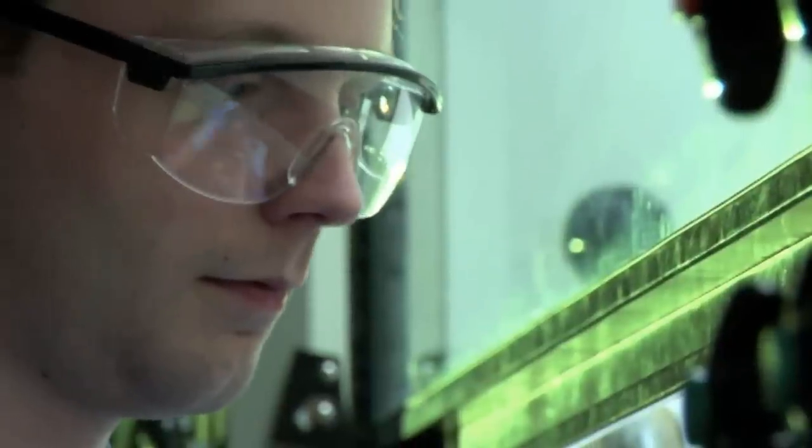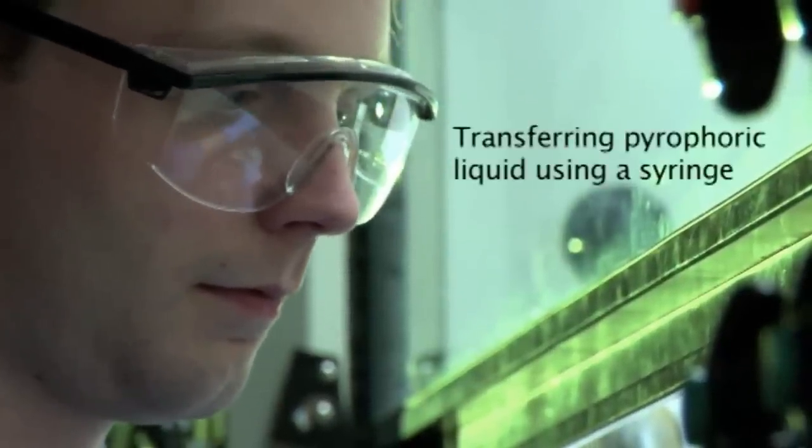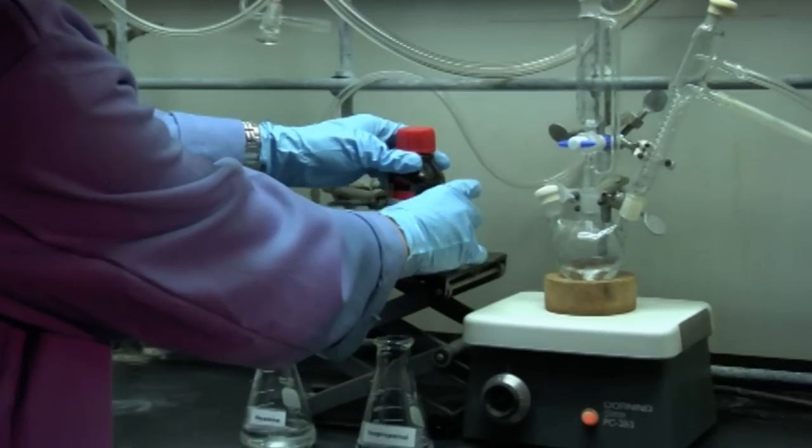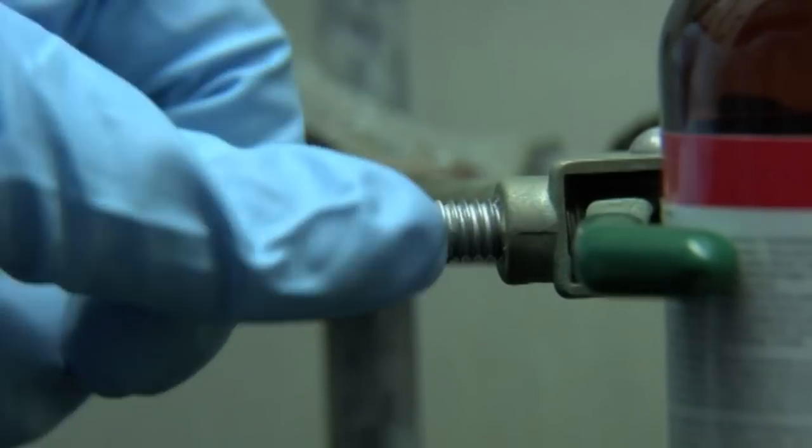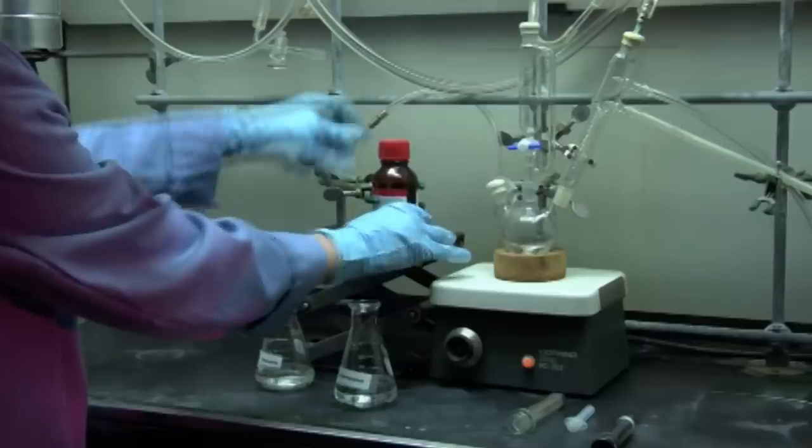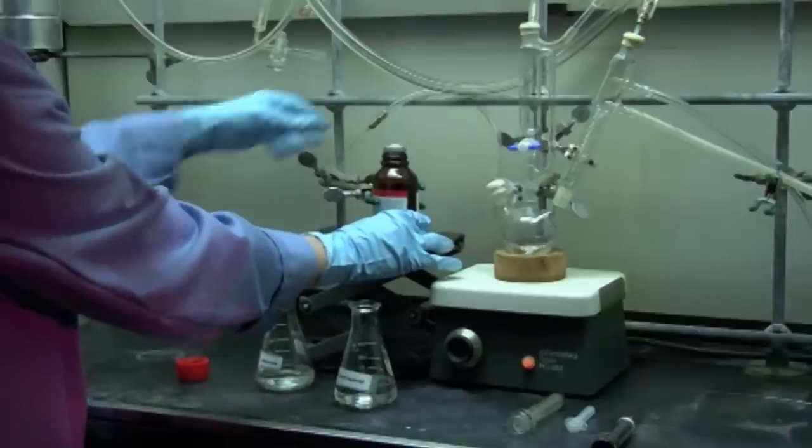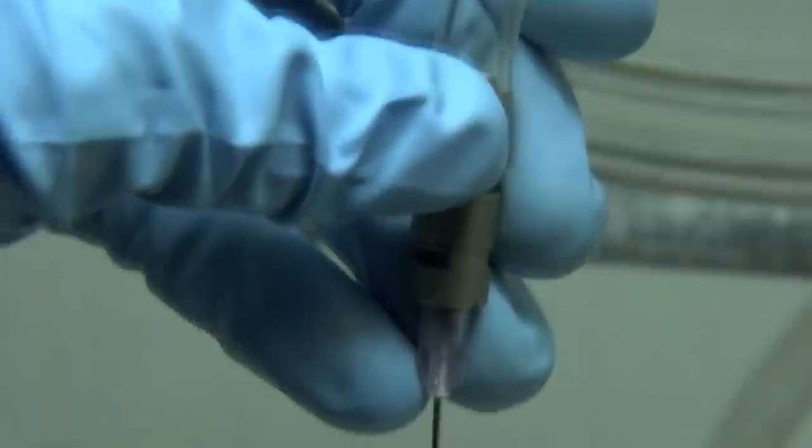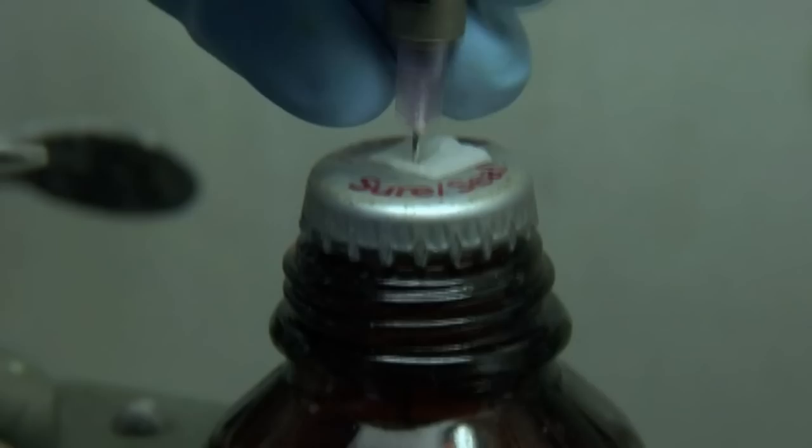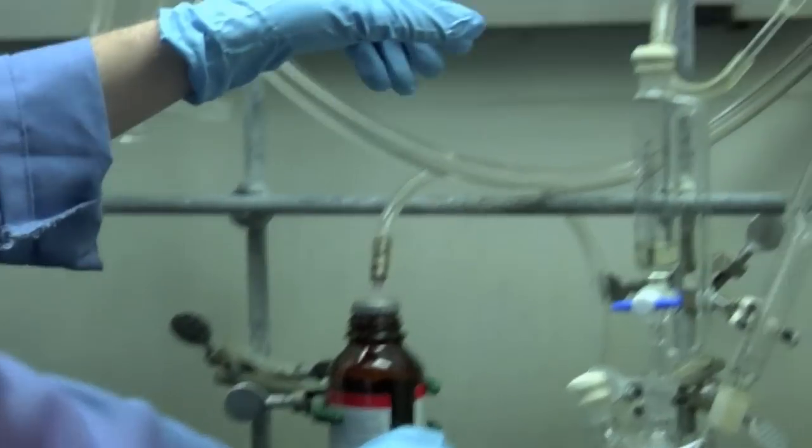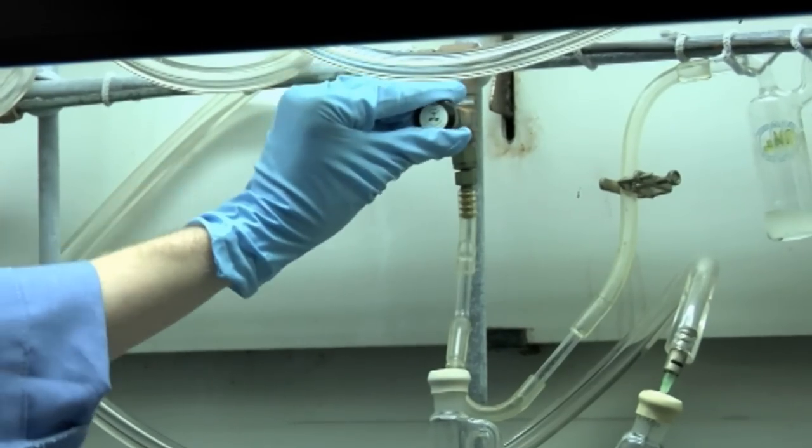Dustin will first demonstrate transferring the pyrophoric liquid using a syringe. When using this method, first clamp the reagent bottle and receiving vessel to prevent them from moving during the transfer. Next, insert a needle from an inert gas source with a bubbler outlet into the bottle, keeping the needle tip above the liquid level. Remember that the goal of this technique is to equalize the pressure in the reagent bottle.